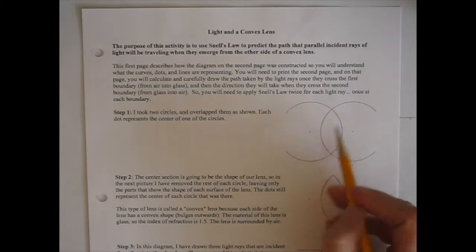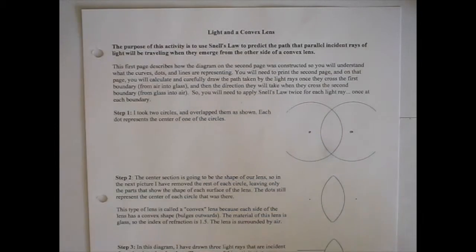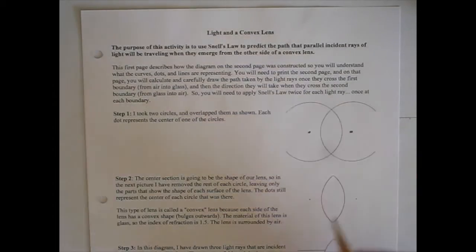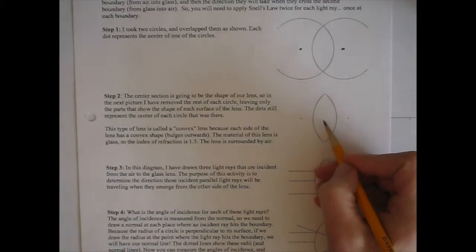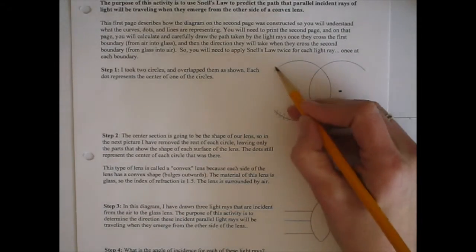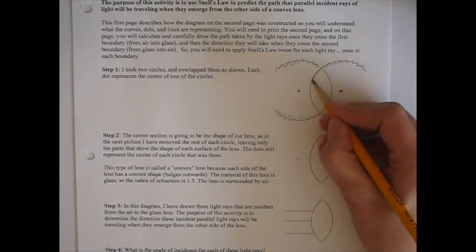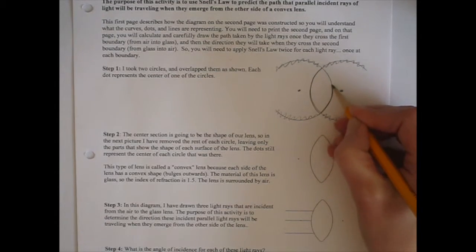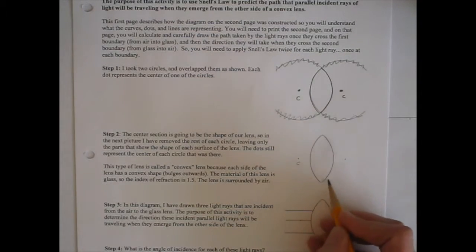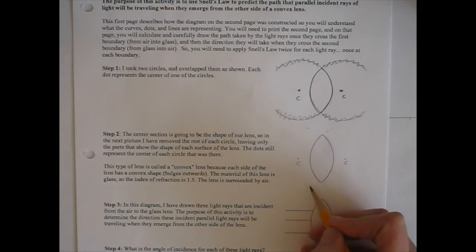This first picture — step one — shows two circles with the center of each circle marked, and those two circles are overlapping. This is the center of the left circle and this is the center of the right-hand circle. In the second picture, what I have done is erased parts of the circles, keeping only the overlapping portion, and I've also kept the centers of the circles. You can imagine where the rest of those circles were.